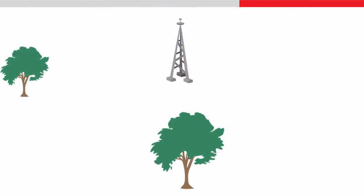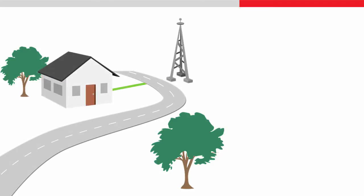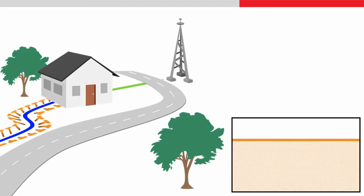We will use the example house project where several different lines form a road, a building footprint, a service line and a pipeline. Our task for this video is to stake the route of the pipeline and to mark where it is needed to dig slopes in order to lay the pipeline in a trench below the ground surface.